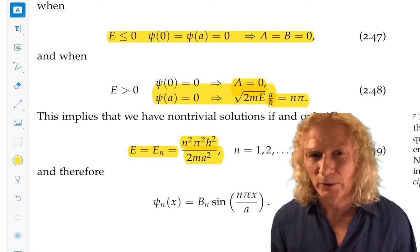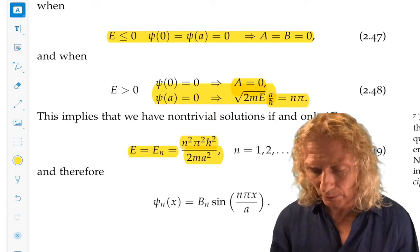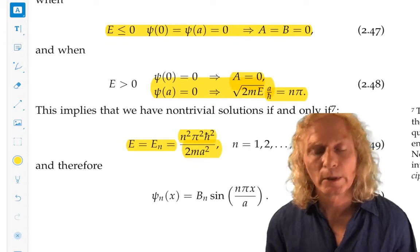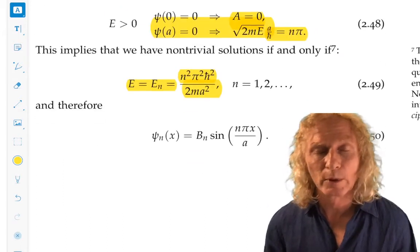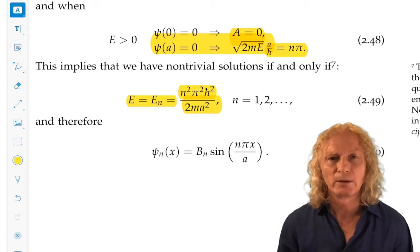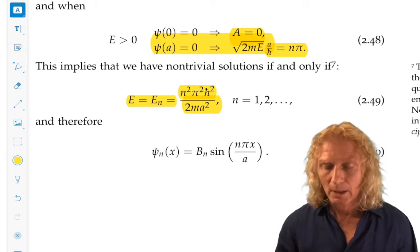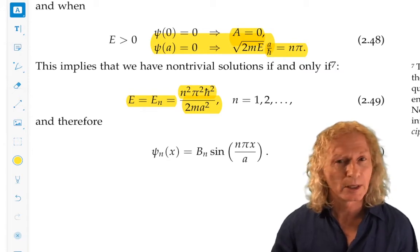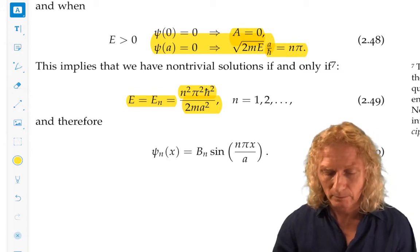This is a fascinating result, because it says two things. One is it says energy can only occur in discrete units. It's quantized. And it says that there is no zero in energy. Energy can never be zero.